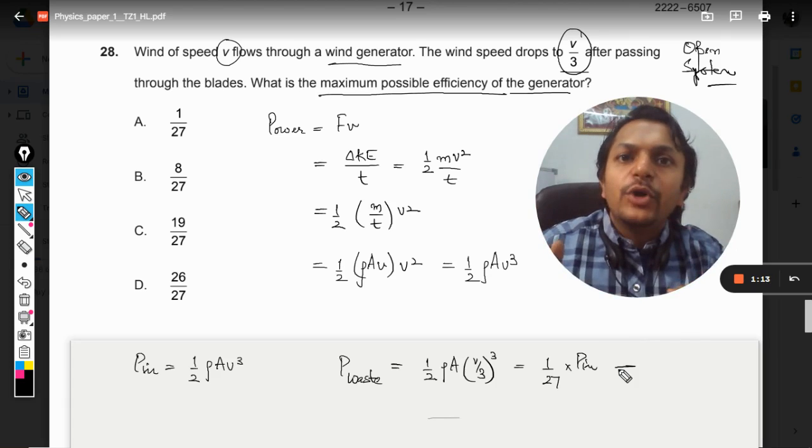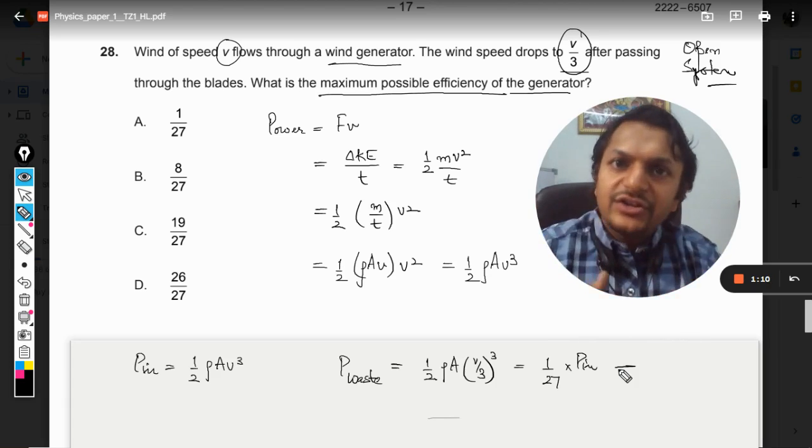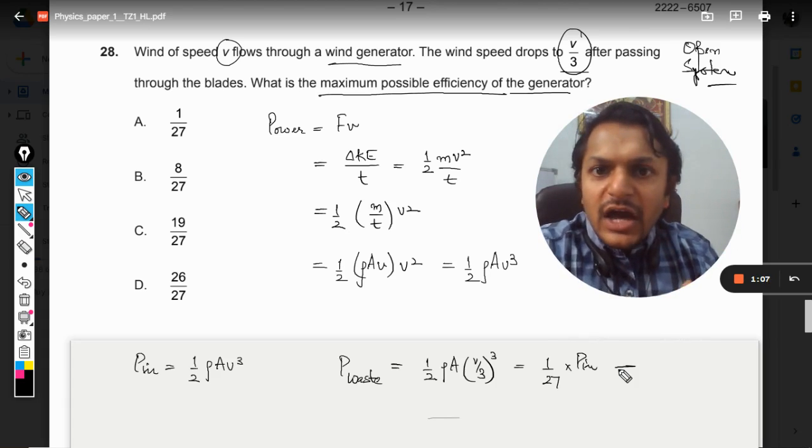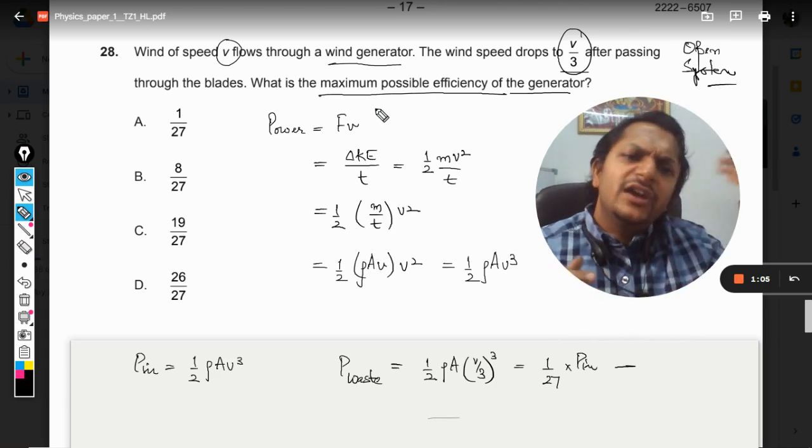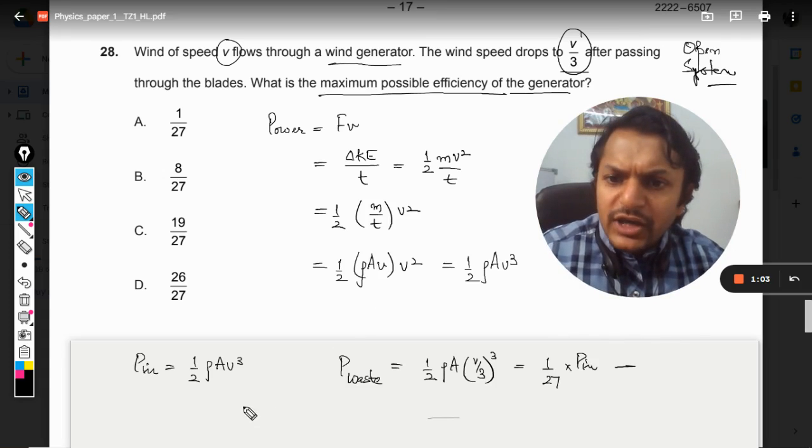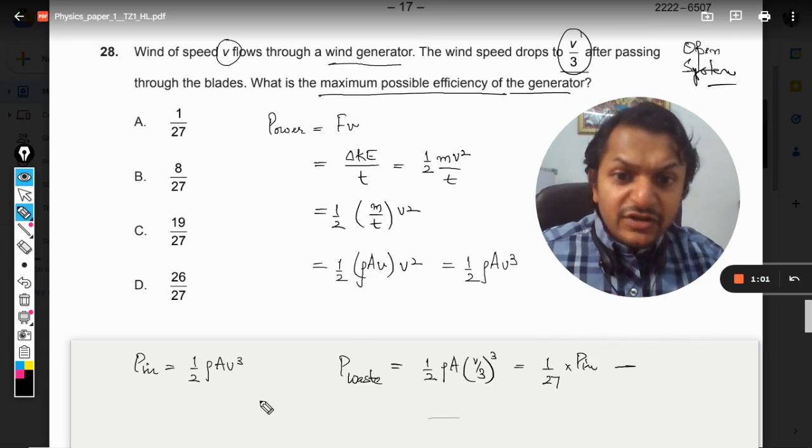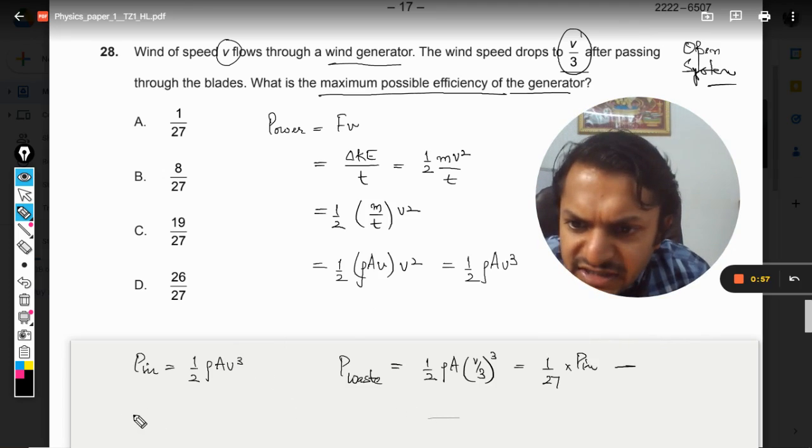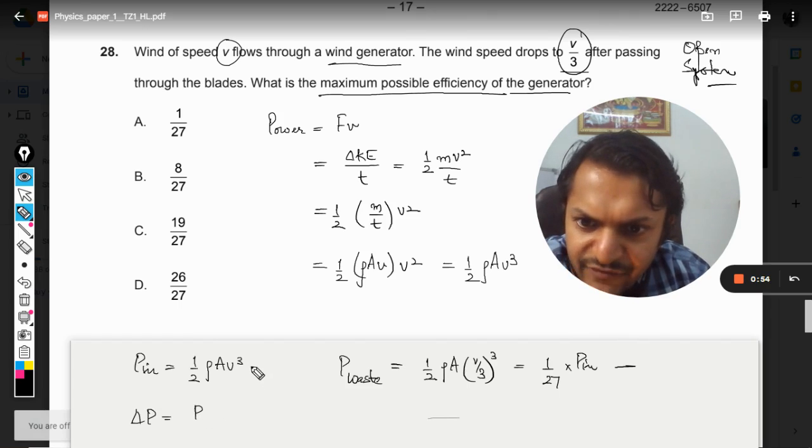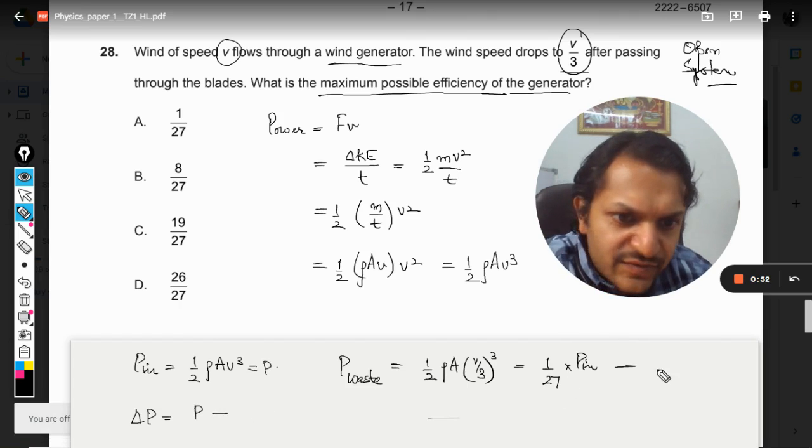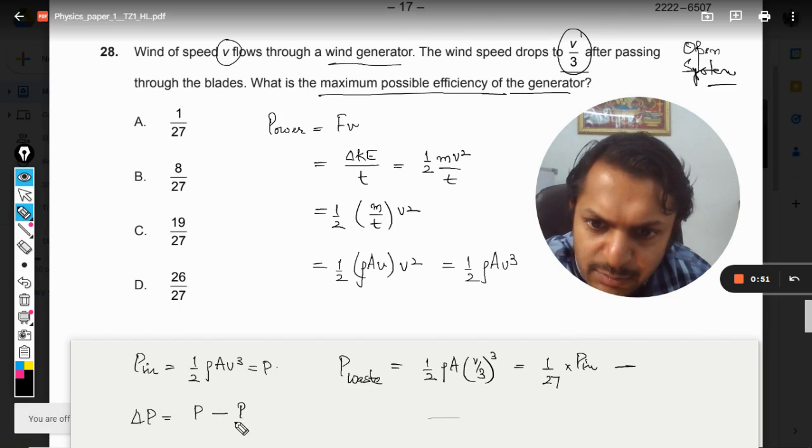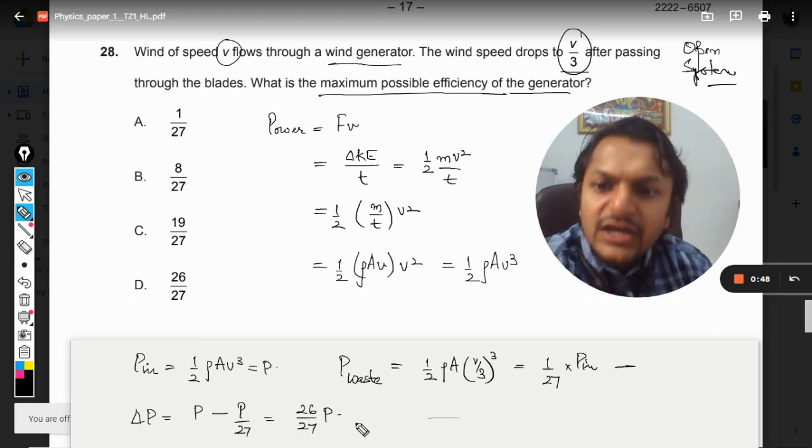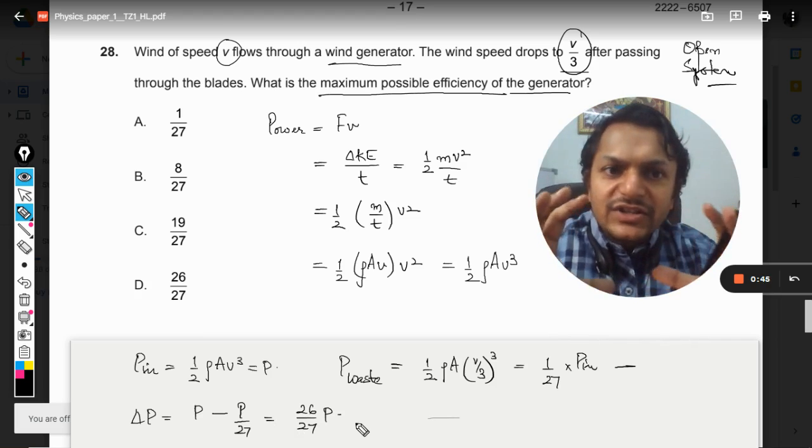What happened to the rest of the energy? The rest of the power was converted by the generator into electricity. What is the maximum possible efficiency? We take it as 100%, so whatever is the gap of this energy is converted into electricity. What is ΔP? ΔP is P minus P/27, which equals (26/27)P. This is the change in energy that is not present with the fluid now, and that must be extracted by the turbine.